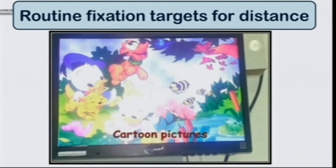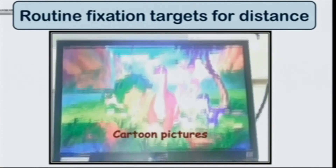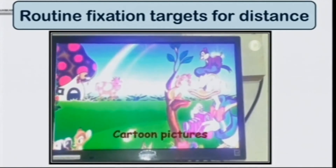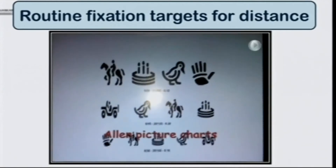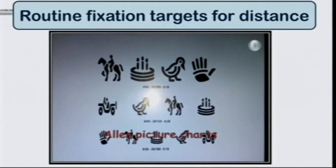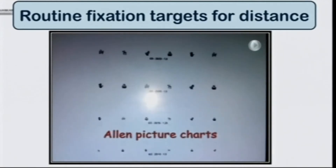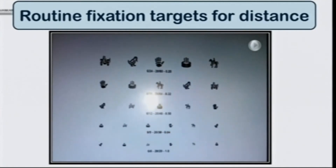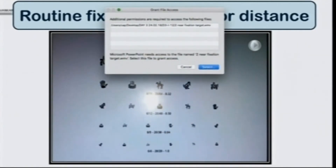In a very young or pre-verbal child, we could use Allen picture charts or Lee symbols, which are again a part of Snellen charts. So we don't need any extra equipment — what is already there in our OPD can be used as a fixation target.